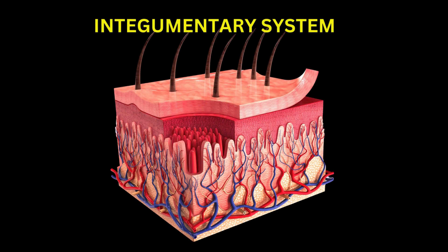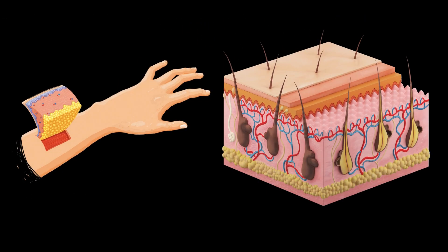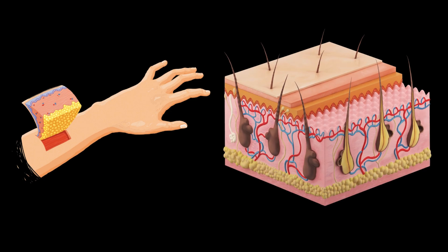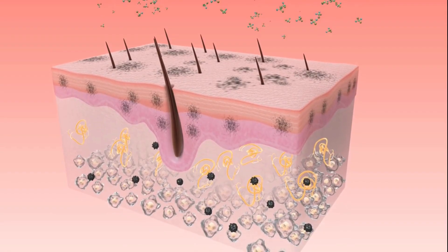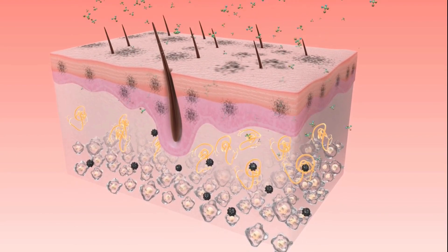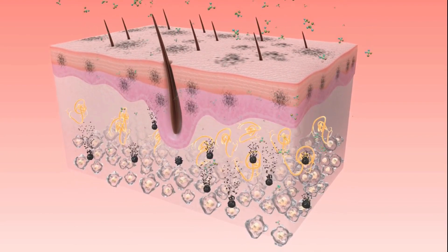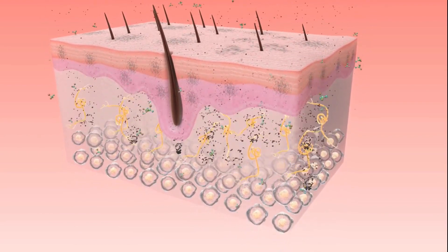Integumentary system. The integumentary system is the organ system that includes the skin and its derivatives — hair, nails, and glands. It serves several functions, including protection, temperature regulation, sensation, and vitamin D synthesis.